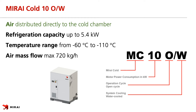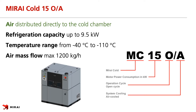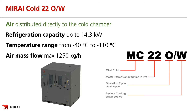Air mass flow is maximum 720 kg per hour. The medium open air cycle machine is Mirai Cold 15. MC 15 is the only machine that is cooled by air. Cooling capacity of MC 15 is up to 9.5 kW and air mass flow is maximum 1200 kg per hour. The largest open air cycle machine is Mirai Cold 22, with cooling capacity up to 14.3 kW and air mass flow maximum 1250 kg per hour.